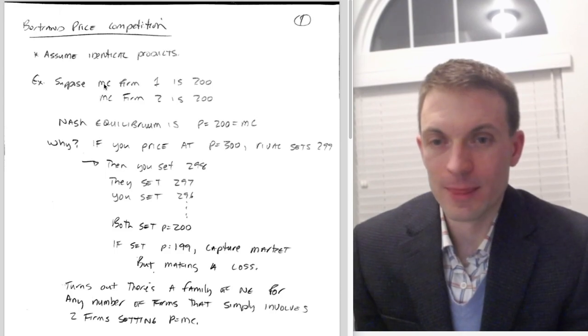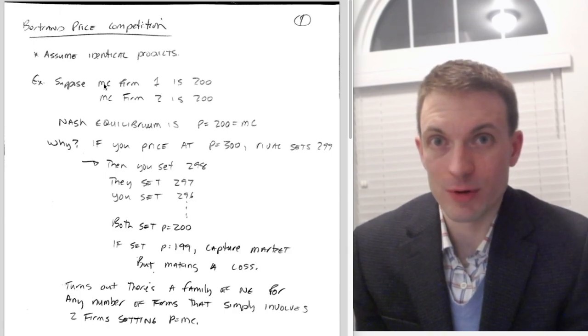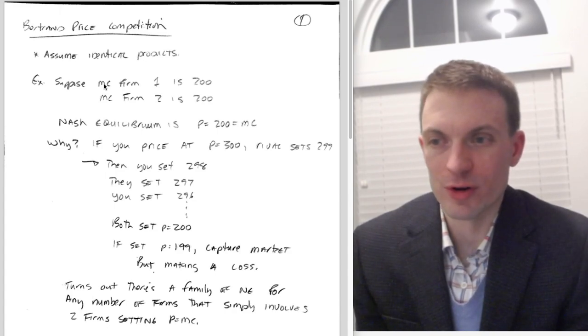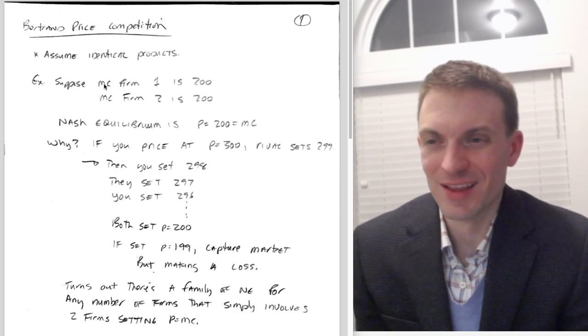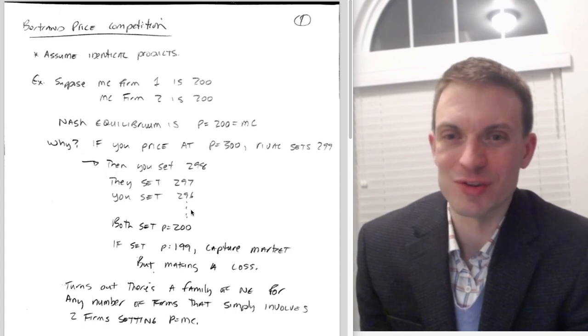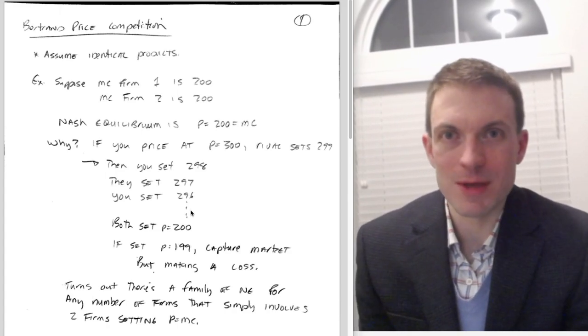Why is this the case? Well, the idea is if you were to set a higher price—suppose you set a price of 300—then the rival now has an incentive to set a price of 299 and capture the market, and they're still making profits, so that's wonderful. But then you realize you can set a price of 298 and undercut them and capture the market. But then they can set a price of 297, and you can set a price of 296, and so on and so forth.